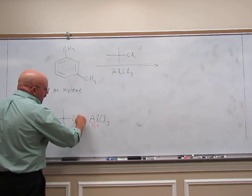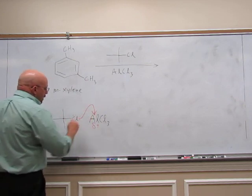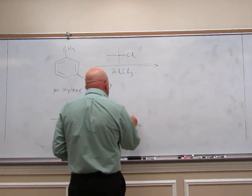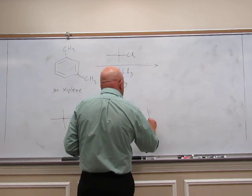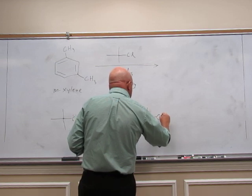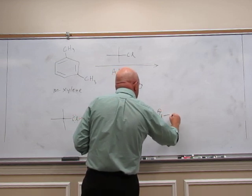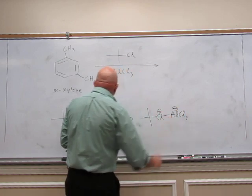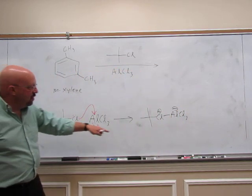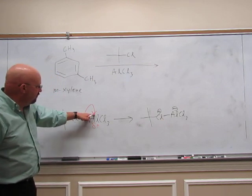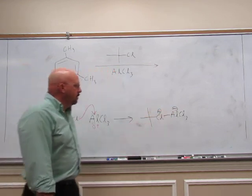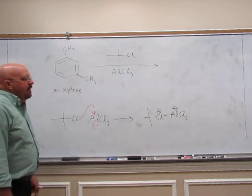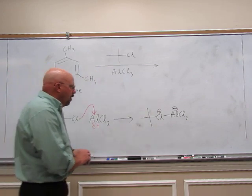The chlorine from our alkyl halide is going to donate to the aluminum. Get your charges. Initial tail becomes more positive so that chlorine has a full positive charge. Final head becomes more negative. The aluminum has a full negative charge. Now that chlorine being an electronegative atom does not like having the plus charge, so this is going to break apart.